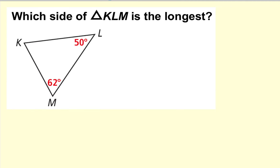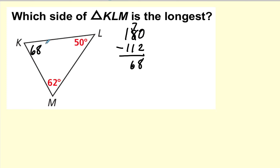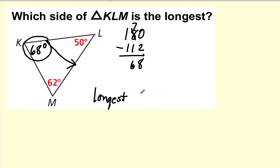Let's see if we can decide which side is the longest. First, let's find the missing angle. I take 180 and subtract these two — they add together to make 112 — so the missing angle is 68 degrees. Now I can decide on the longest side. The longest side is always opposite the biggest angle. The side opposite the biggest angle will be segment LM, so LM is the longest. They're always opposite each other.